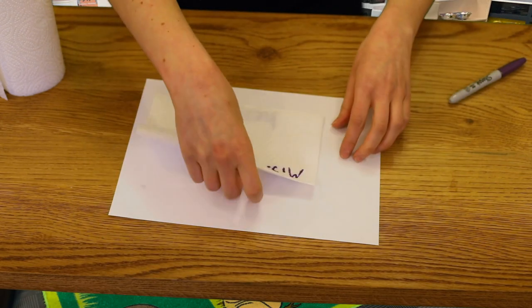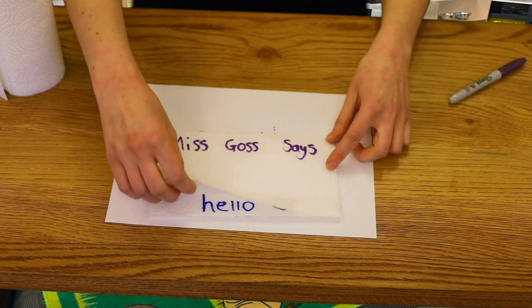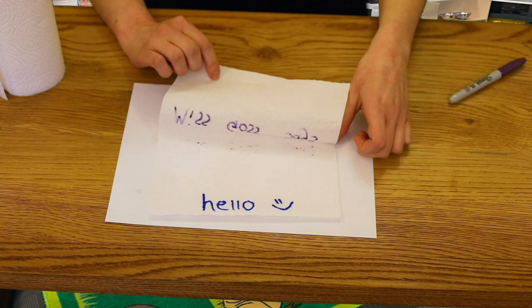So then yours should look like this if I turn it around for you. So it says Miss Goss says. Then I open it up and there's the secret bit. It says hello.